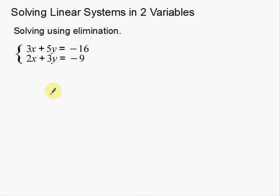Now we're going to look at a different example and eliminate a variable again. In this second example, we have 3x and 2x, 5y and 3y, and then negative 16 and negative 9. We need to look at these variables. It's not immediately apparent which one to eliminate — you can eliminate whatever variable you want. You can eliminate the x's or the y's. We need the coefficients to be the same, so we need to find least common multiples.